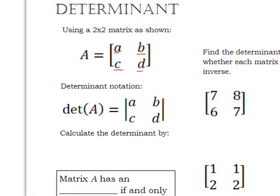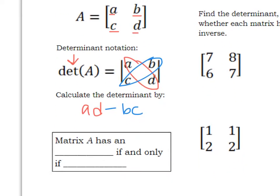So if I want to find the determinant, and that's what my notation is, det of matrix A, we're going to take A times D minus B times C. And the importance of a determinant is that a matrix has an inverse if and only if the determinant of that matrix is not equal to 0. So if my determinant is equal to 0, then that means there is not an inverse for my matrix.